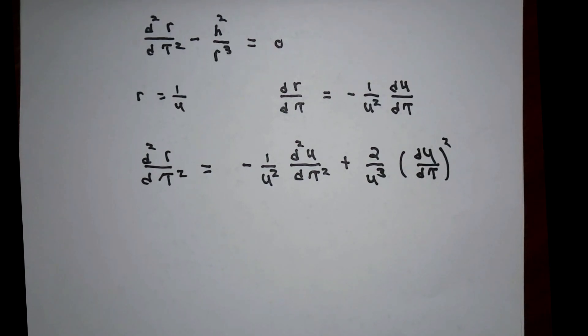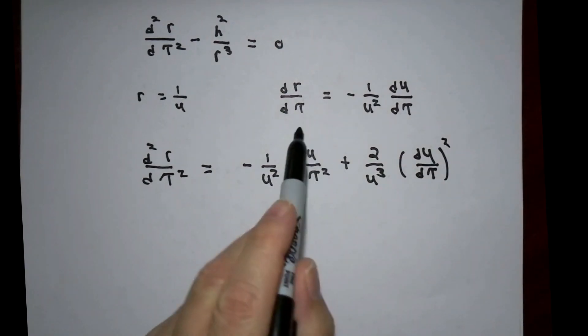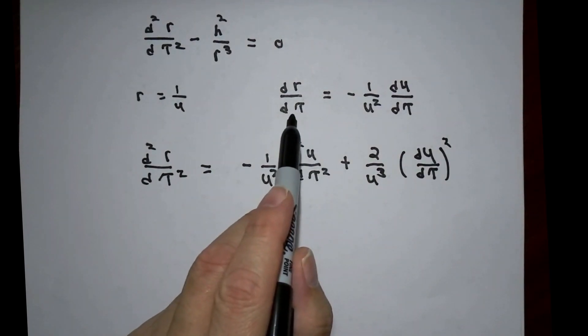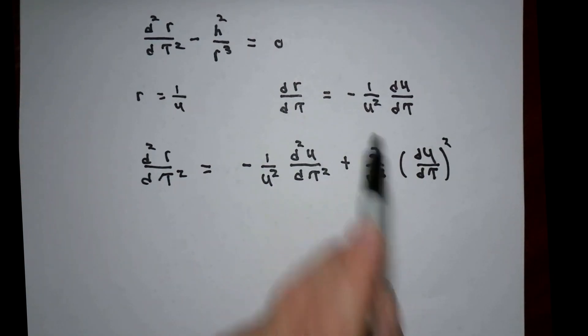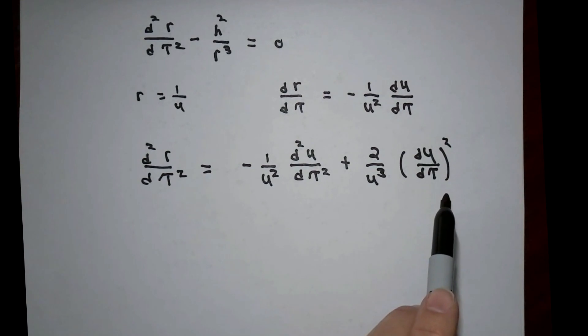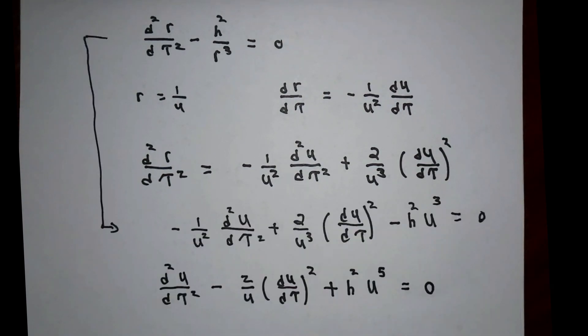Since r is one over u, the derivative of r with respect to tau is negative one over u squared du d tau. Differentiating again and using the product and chain rule, we find out that the second derivative of r with respect to tau is the negative of one over u squared, second derivative of u with respect to tau, plus two over u cubed times the square of du d tau.